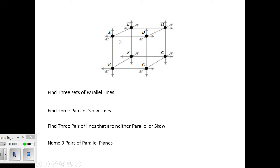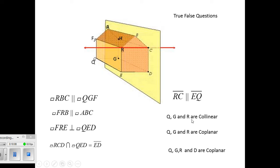So pairs of parallel planes, again, would be like, again, if this were a room, the floor and the ceiling, front wall, back wall, and just name the planes that contain them.